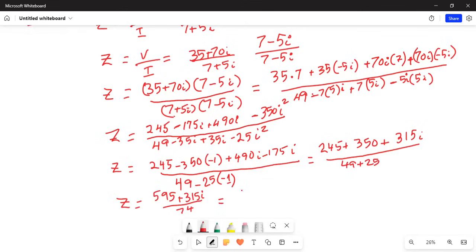Or we can keep the real part separate, 595 divided by 74, plus the imaginary part which is 315 divided by 74i. So this is your final answer for the impedance.